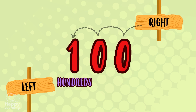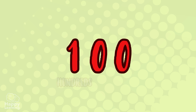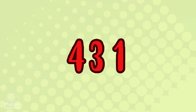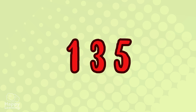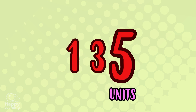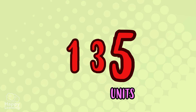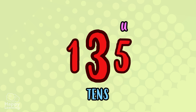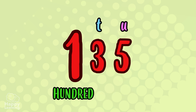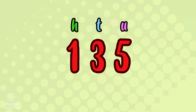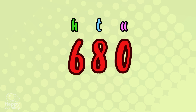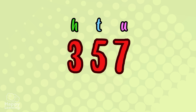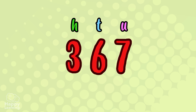For example, let's write the number a hundred and thirty-five, which is equivalent to five units, three tens, and a one hundred. Let's try with some other numbers: three hundred and sixty-seven.